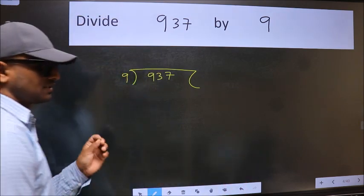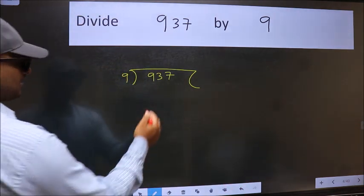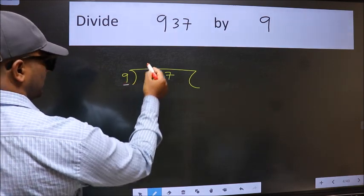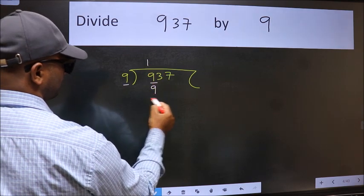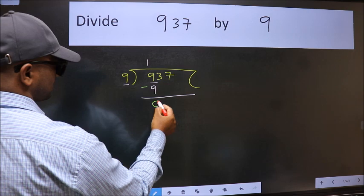This is your step 1. Next, here we have 9 and here 9. When do we get 9 in the 9 table? 9 once 9. Now we should subtract. We get 0.